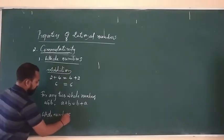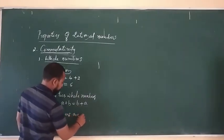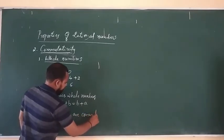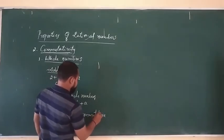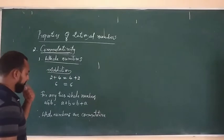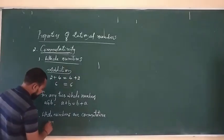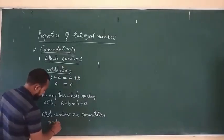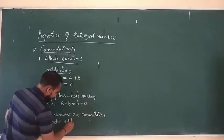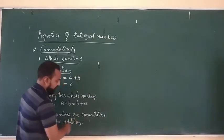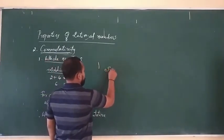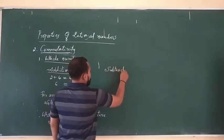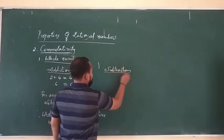Therefore the whole numbers are commutative under addition. The next operation is subtraction.